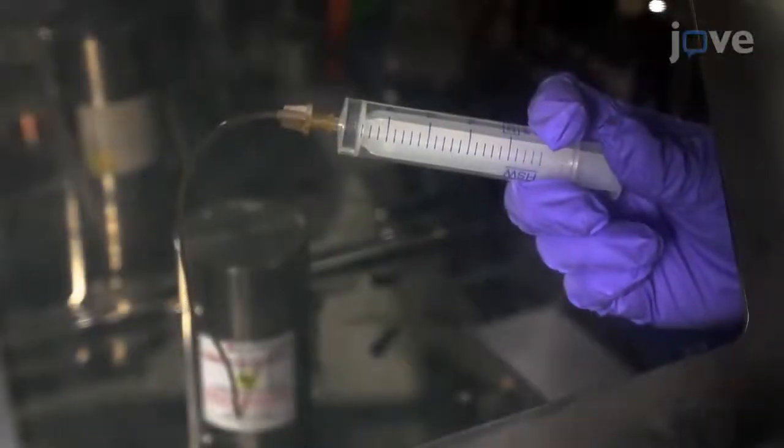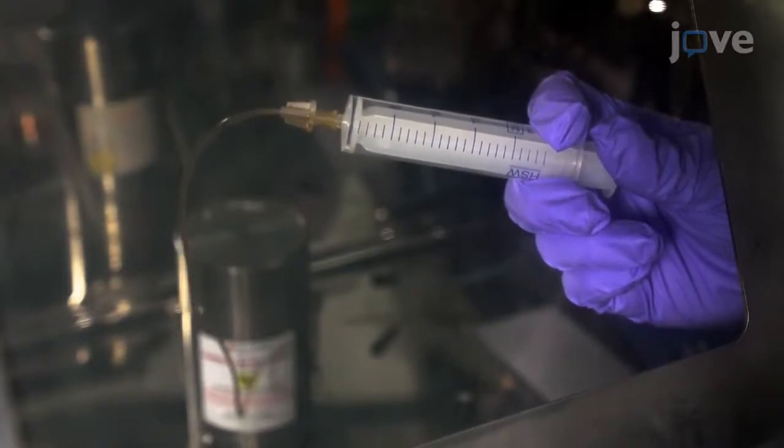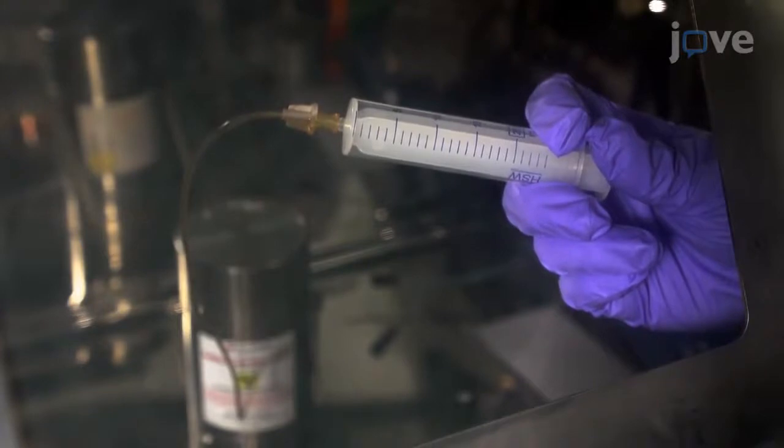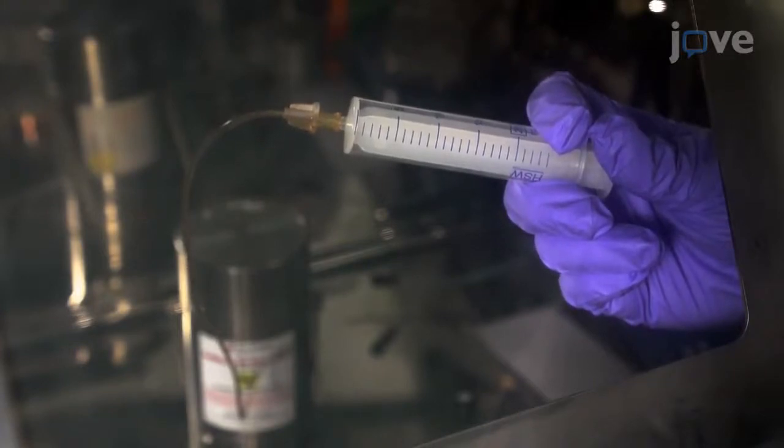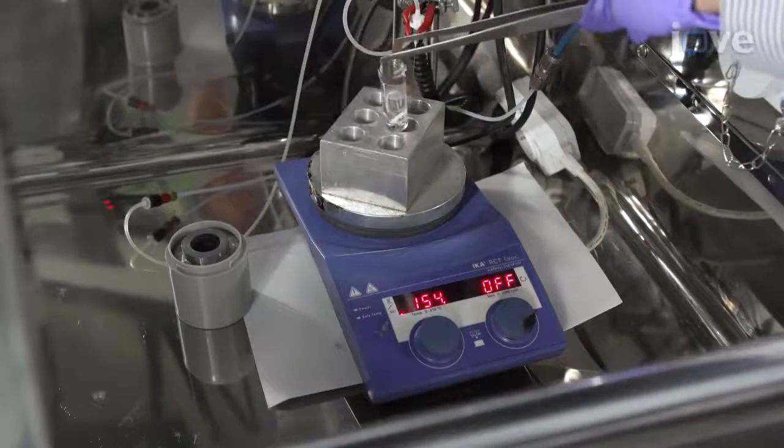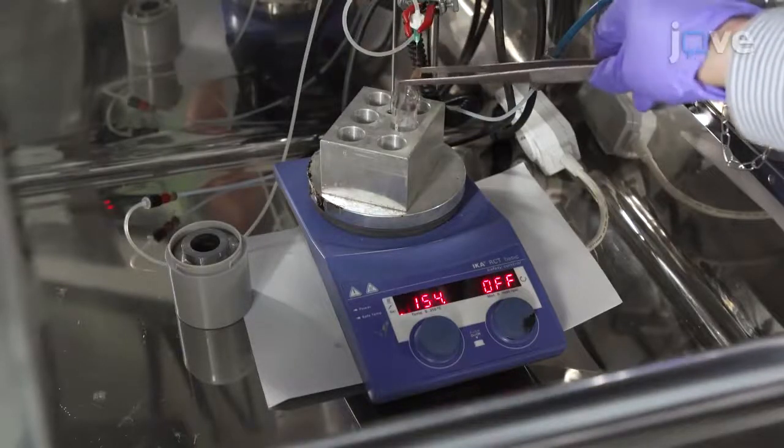Begin by using 0.5 molar hydrochloric acid to elute radiolabeled gallium trichloride from a radiolabeled gallium-germanium generator. Purge the compound in a 5-milliliter reaction vial with nitrogen gas at 80 degrees Celsius.